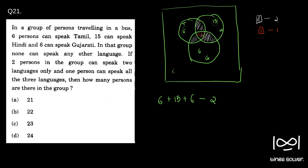Looking at the red region, when you add six, fifteen, and six, the red center region gets counted three times. To correct for this, we subtract the red region two times. So the calculation becomes: 6 + 15 + 6 = 27, minus 2 (for the white regions), minus 2 (for the red region) = 23.